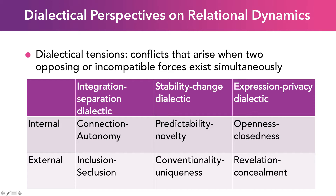There are three dialectics. The first is the integration dialectic: how much are we together versus apart? Internally, the connection-autonomy tension is the push and pull between wanting to do things together versus doing your own thing. Externally, the inclusion-seclusion version might look like: as newly married people we want to spend our first Thanksgiving just the two of us, secluded, but our families are saying no, you must come to Thanksgiving with us.